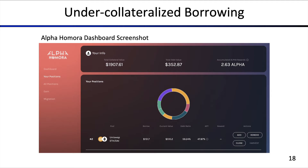One example screenshot is the AlphaHomora dashboard. We have a collateral value of a particular pair of about $1,900, a small amount of debt of $350, and we are receiving some tokens as a reward — that's a particular APY based on the tokens. You can also see the position being opened, which is a position in the Uniswap ETH/DAI pool. You may add additional elements or close the position if you'd like.